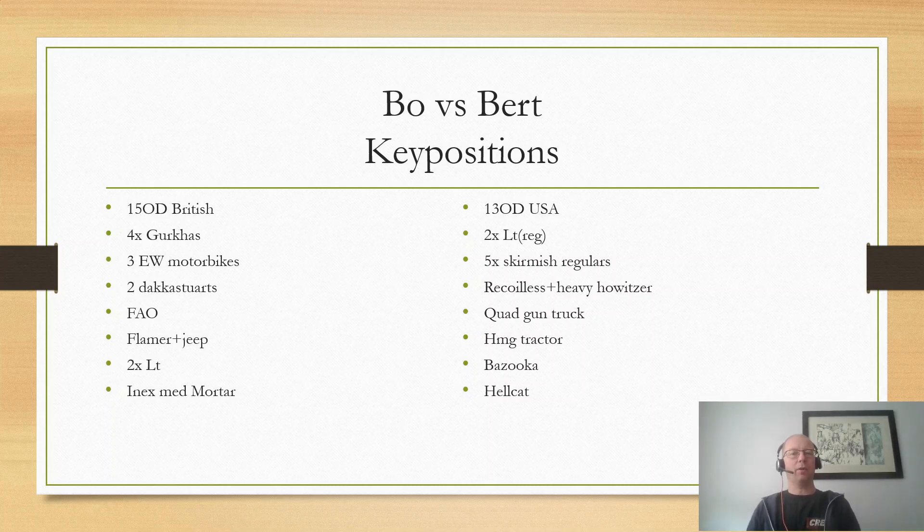Bert's list was a very typical American skirmish list. He had two regular lieutenants with five skirmish units, a recoilless rifle which was a light howitzer, a heavy howitzer, a quad gun tractor, a quad gun truck which had like four heavy machine guns, an HMG tractor, a bazooka team, and a Hellcat.